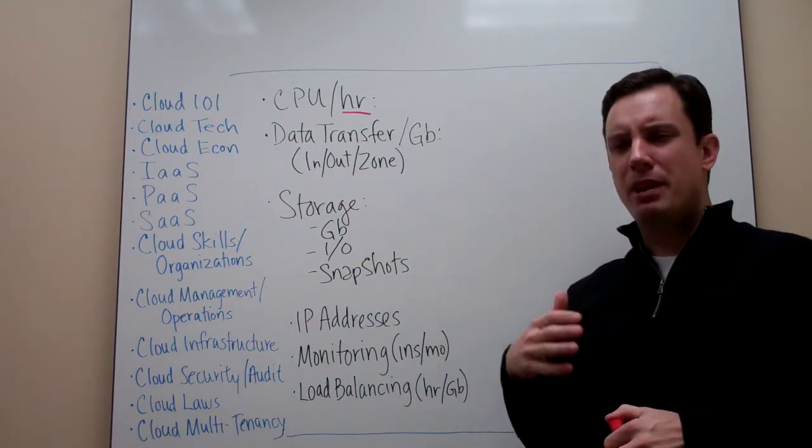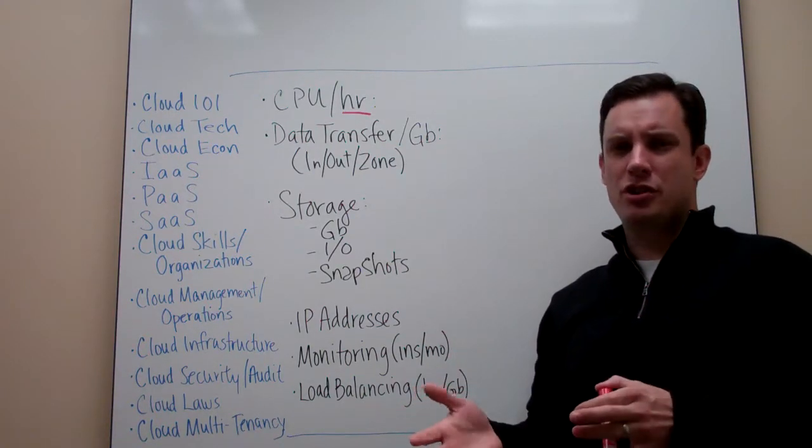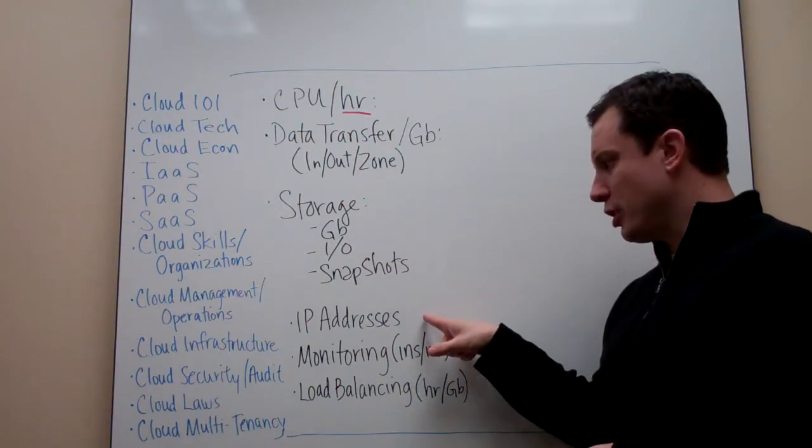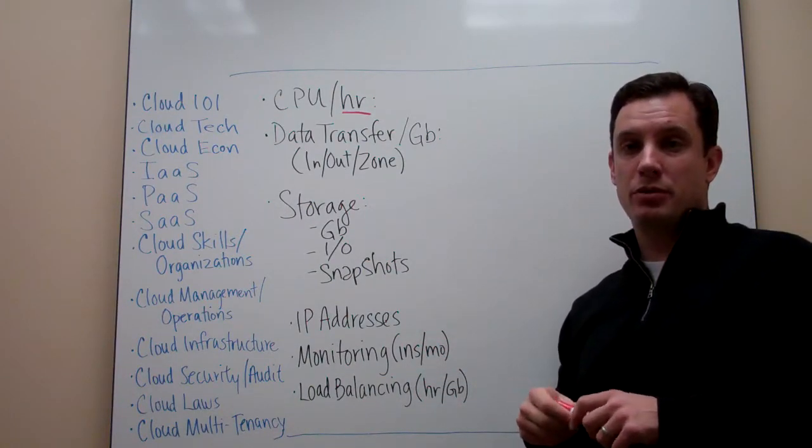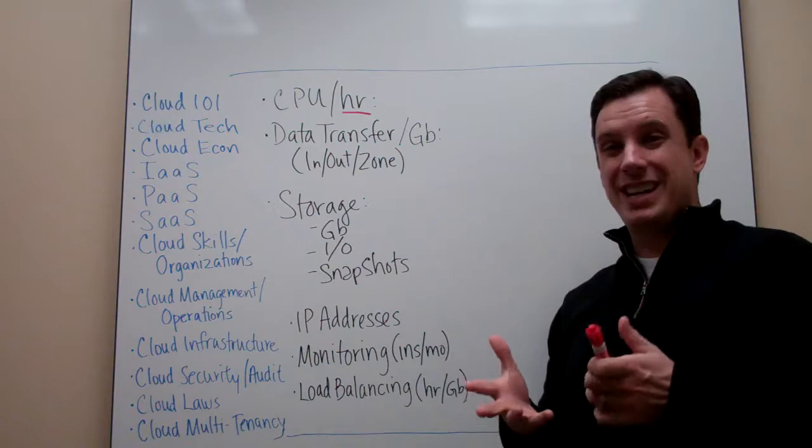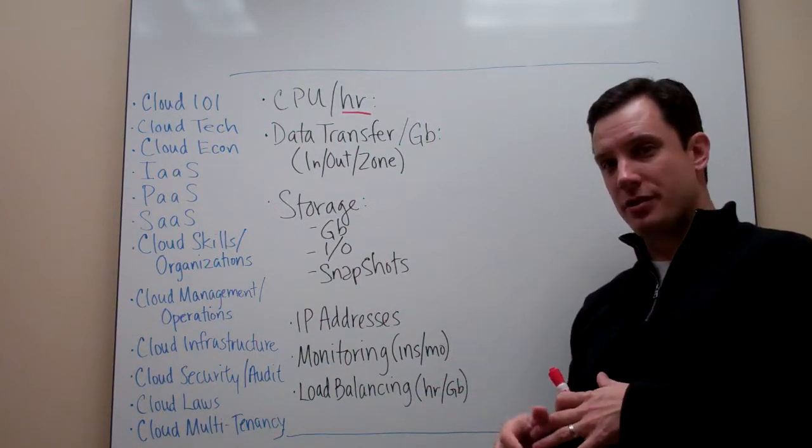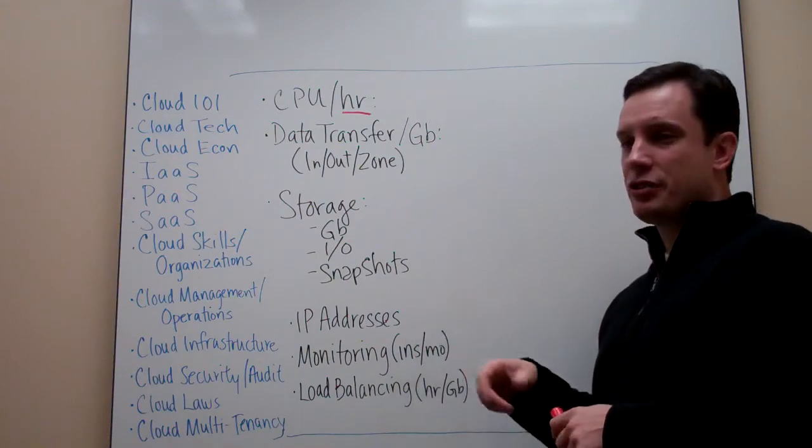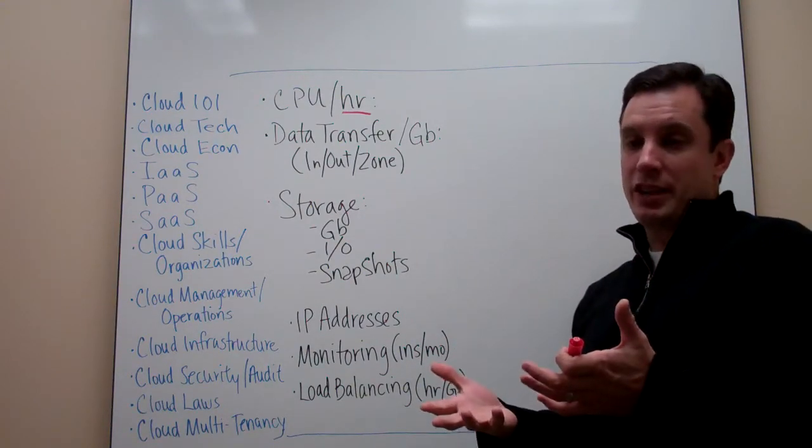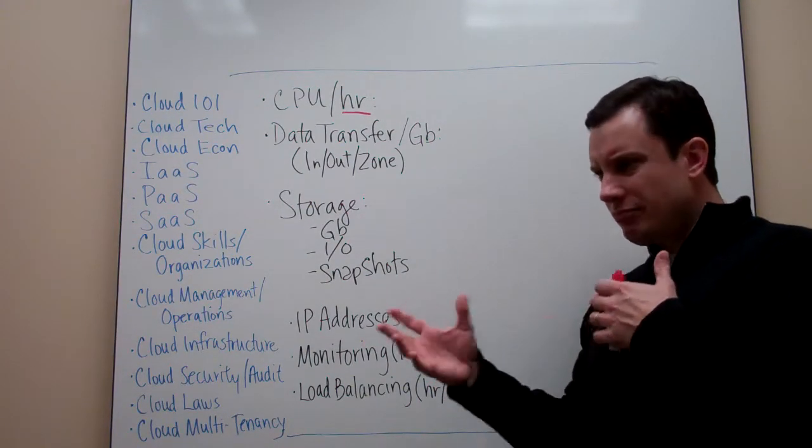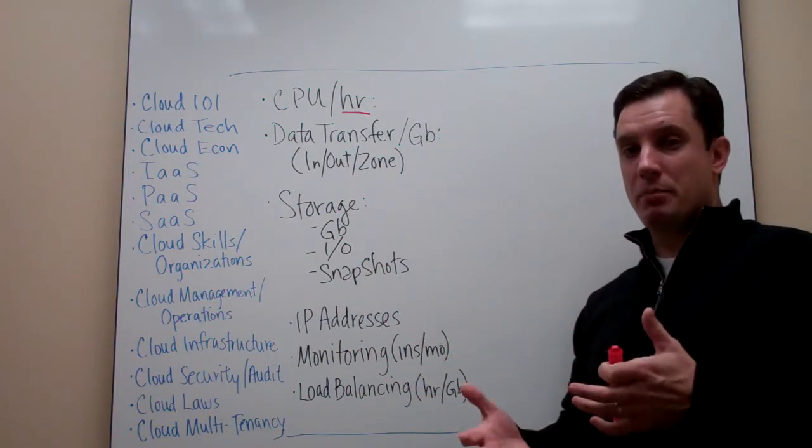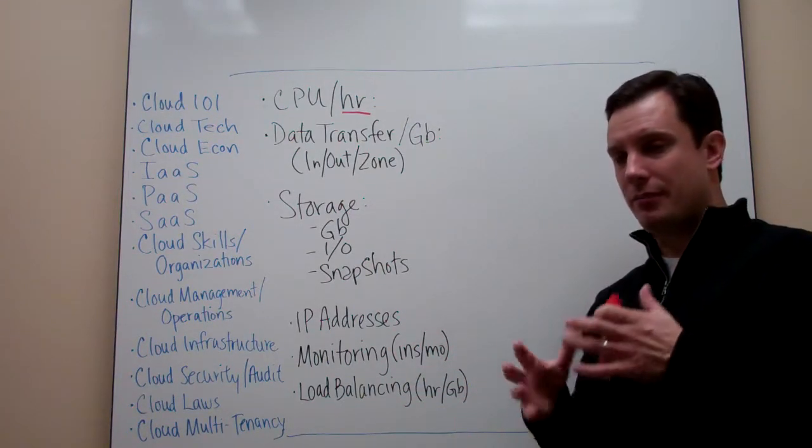The next things we want to look at, maybe we didn't think would be charges, or we didn't think about them, is we could be charged by the number of IP addresses we use. We may be charged also for DNS services to be able to resolve that, whether they're public addresses or private addresses. So you have to look at how many addresses am I going to use? Do I need them monitored? And are there costs associated with those IP addressing or DNS naming attributes?